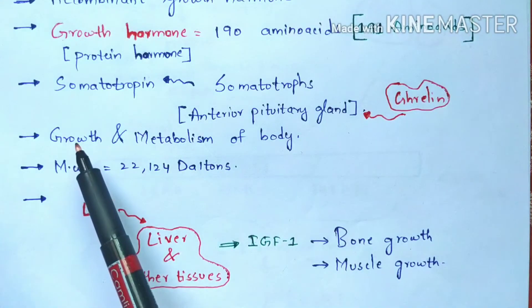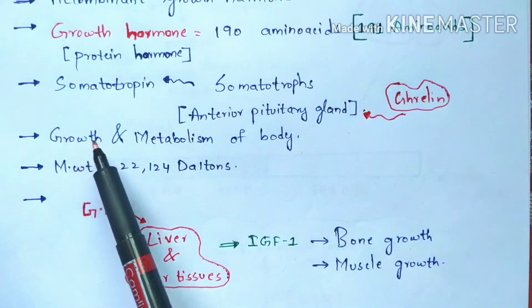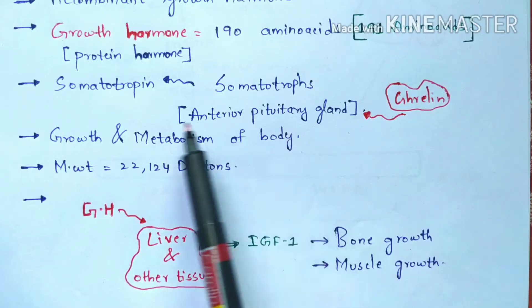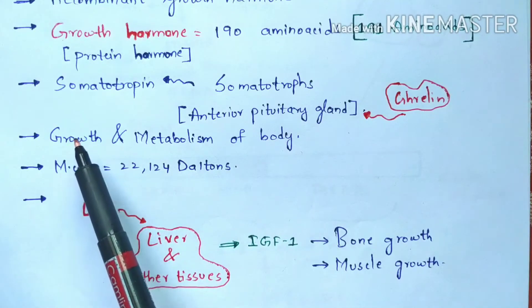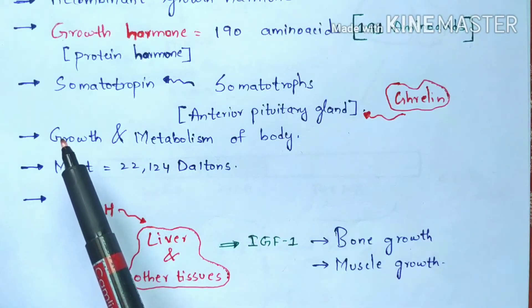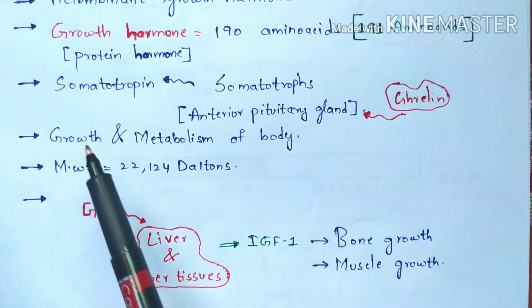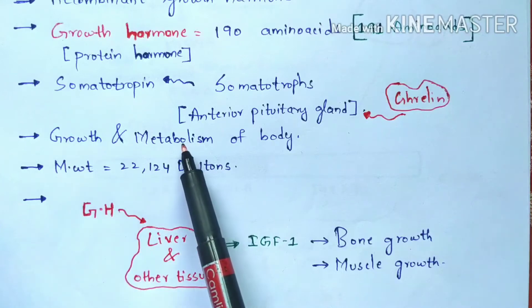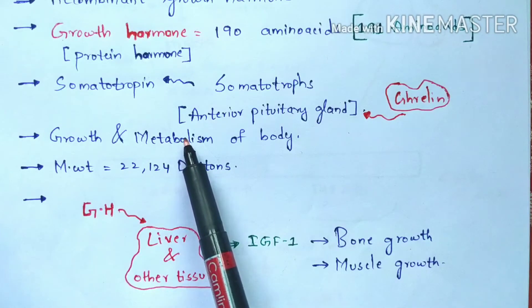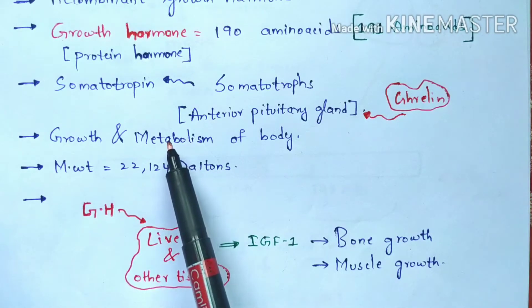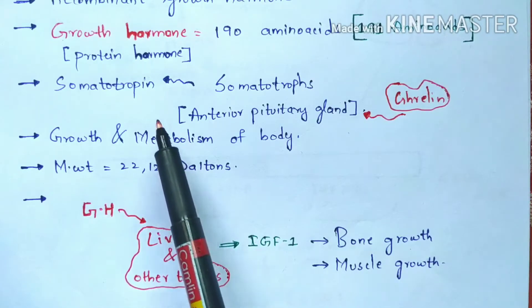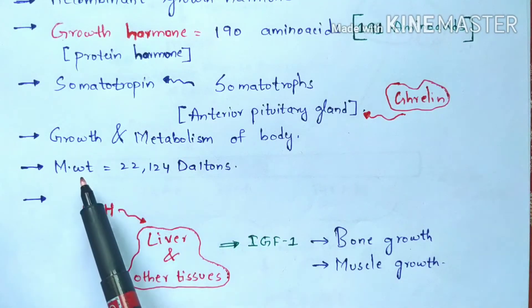The growth hormone is mainly used for the growth and metabolism of the body. Growth refers to the development of bones and muscles, whereas metabolism includes carbohydrate metabolism, protein metabolism, and lipid metabolism — all of which are regulated by this growth hormone.